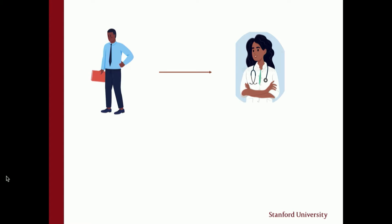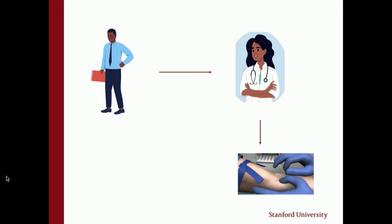The story might diverge here. Bill may have gone to urgent care, the emergency room, or maybe the optometrist. But lucky for Bill, his primary care doctor is pretty astute, recognizes the common signs, and is concerned about myasthenia. So she tells him to go get some blood work. About a week or two later, he gets a phone call: you have myasthenia gravis. I'm going to refer you to a neurologist.